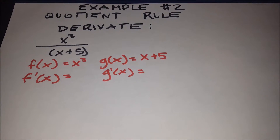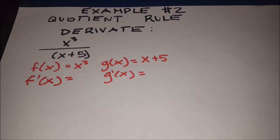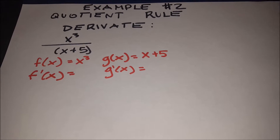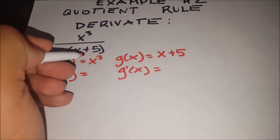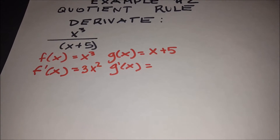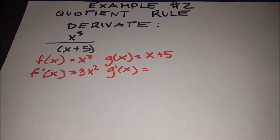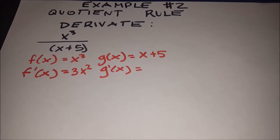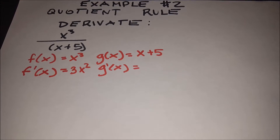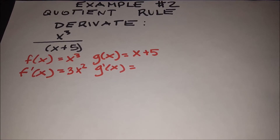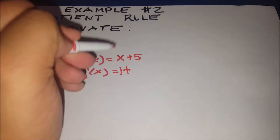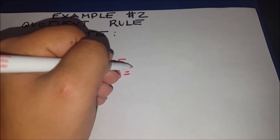Since our formula requires the derivative and the original of both functions, let's write those out. The derivative of f of x, which is x cubed, is 3x squared. For g prime of x, the derivative of x plus 5: the derivative of x is 1 and the derivative of 5 is 0, so g prime of x equals 1.